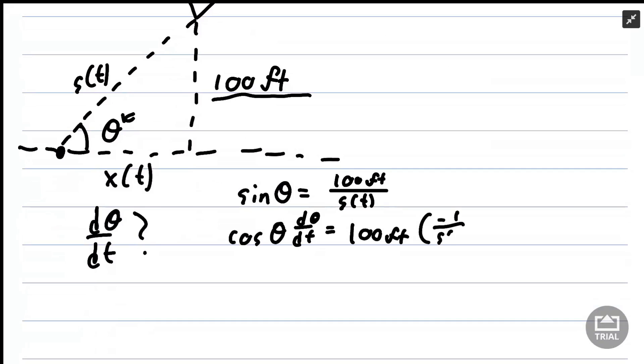On the right-hand side we have a constant 100 feet that's going to be multiplied by negative 1 over s(t) squared. That comes from the power rule. And then we also have a factor of ds/dt from the chain rule.